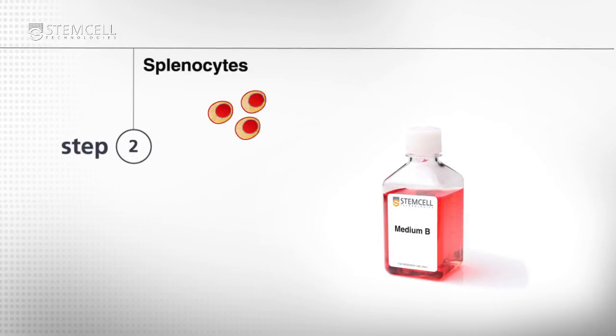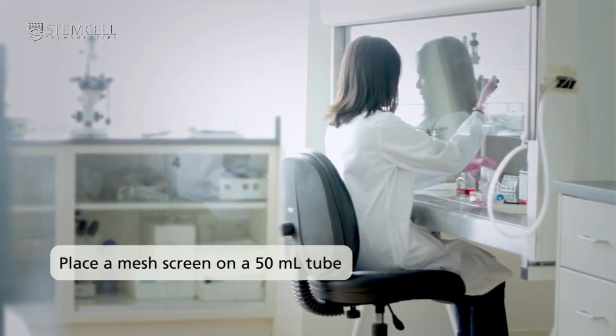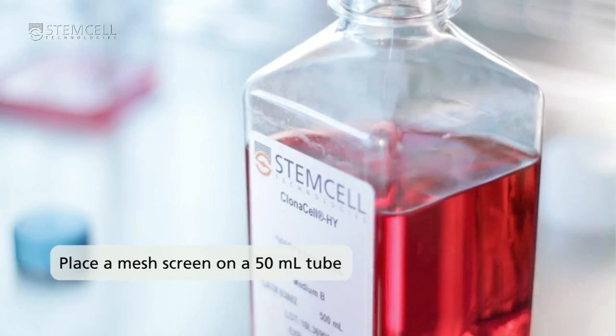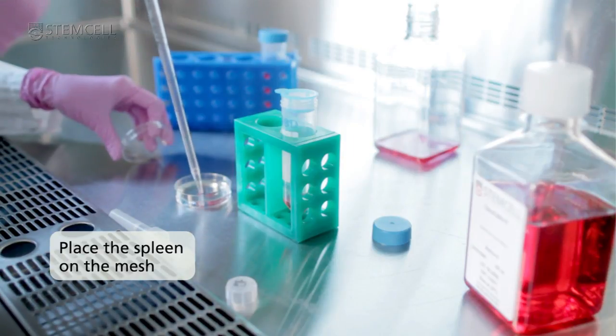To prepare splenocytes, disaggregate the spleen into a single cell suspension. To disaggregate the spleen, place a mesh screen on top of a 50 mil conical tube. Pre-wet the screen with 5 mils of medium B and place the spleen on the mesh.